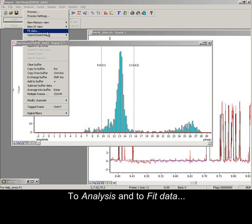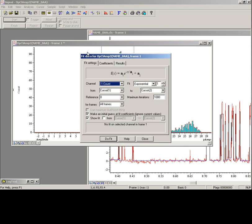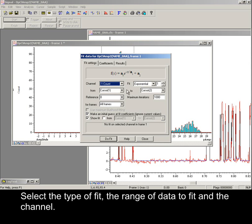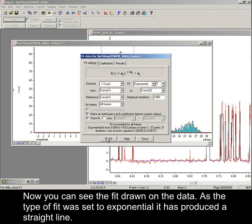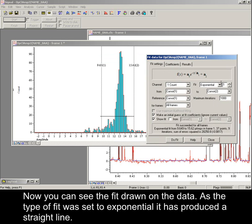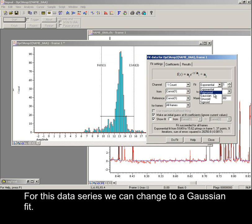To Analysis and to Fit Data. Select the type of fit, the range of data to fit, and the channel. Now you can see the fit drawn on the data. As the type of fit was set to exponential, it has produced a straight line. For this data series, we can change to a Gaussian fit.